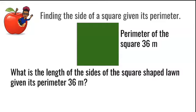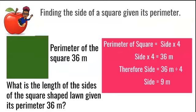How do we find the length of each side of a square given its perimeter? When we go around that square, we get 36 meters. So let's recap: the formula for the perimeter of a square is equal to side multiplied by 4.